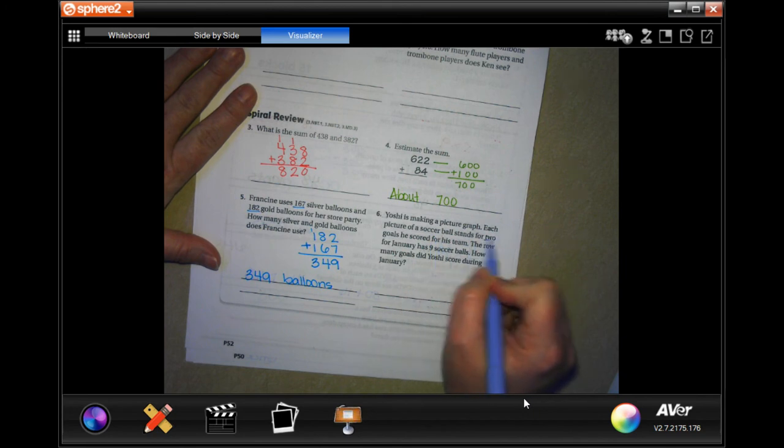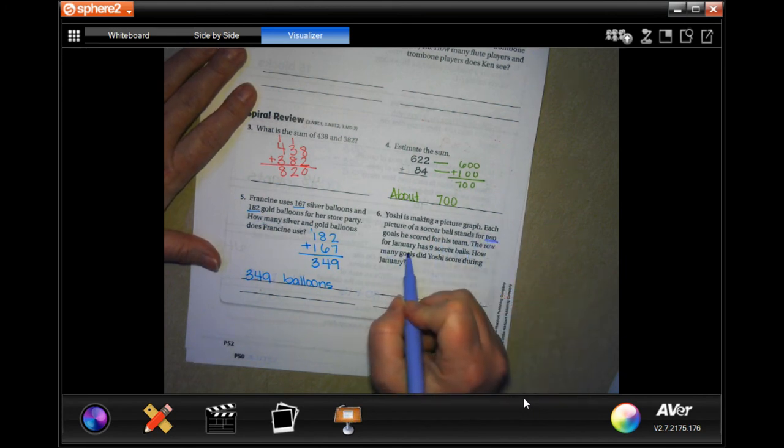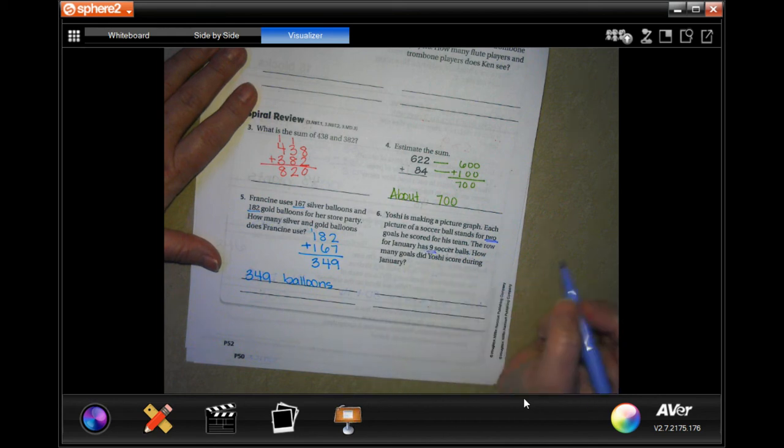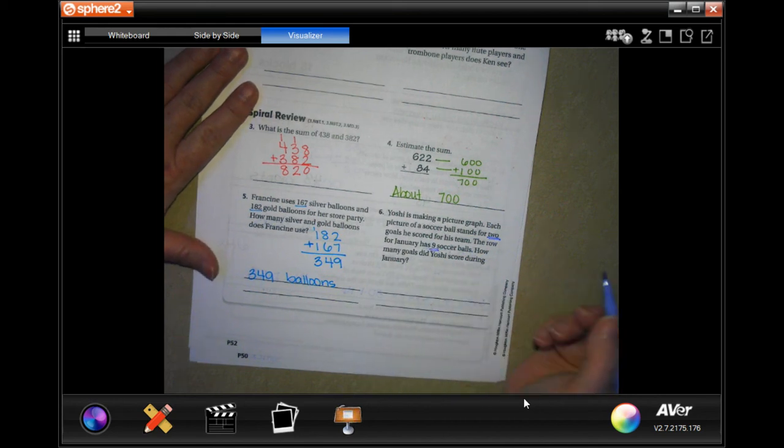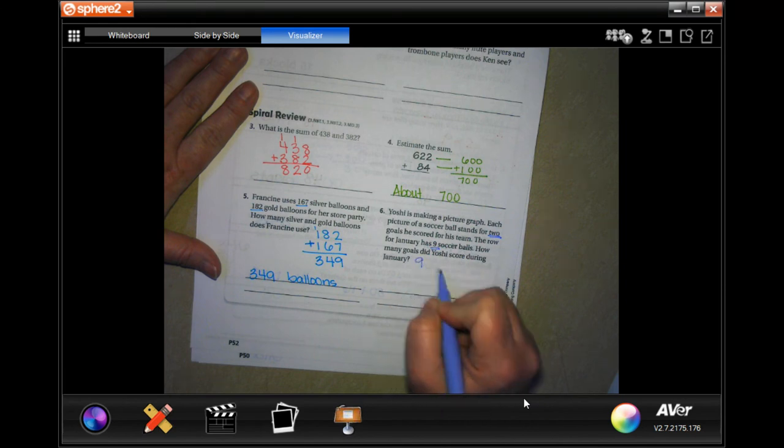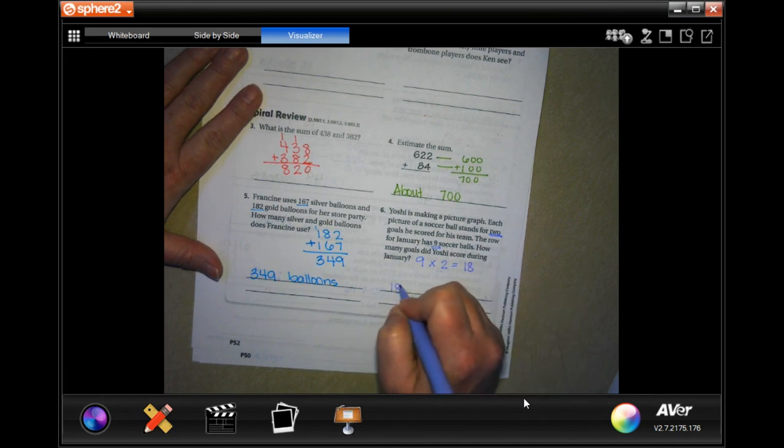Yoshi is making a picture graph. Each picture of a soccer ball stands for two goals he scored for his team. The row for January has nine soccer balls. How many goals did Yoshi score? Well, nine times two is 18. So, 18 goals.